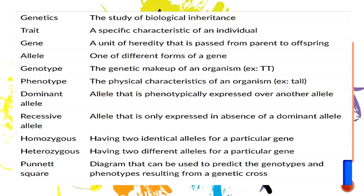Phenotype is the physical characteristics of an organism — for example, tall, small, big, yellow flower, purple flower. Those are physical characteristics. We also have dominant allele: an allele that is phenotypically expressed over another allele, represented by a big letter. Recessive allele is only expressed in the absence of the dominant allele and is represented by a small letter. I'm going to be showing an example of this as we move on to our lesson.